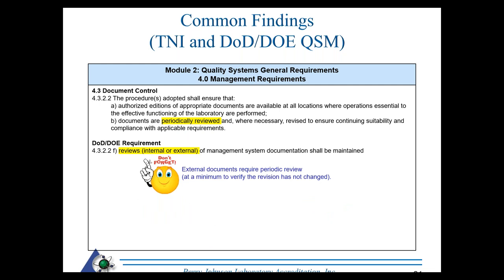External documents that support activities must also be part of the quality management system and fall under the periodic review requirement. This means verifying at minimum that no new revisions have been issued. If your quality management system has been verified to meet a specific revision of an external document — a PGLA policy, test method, or other source — you need to show you've verified no new revision exists, to confirm your system remains compliant with the most current version.